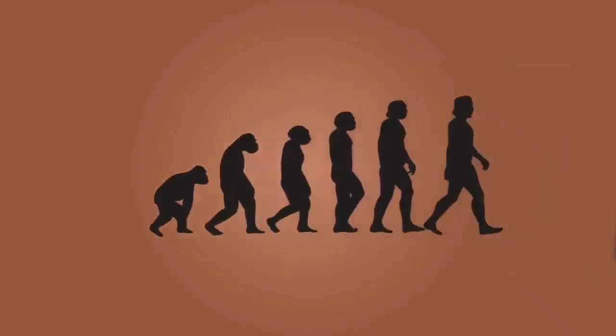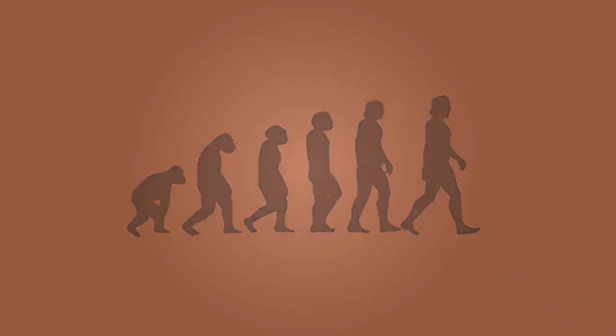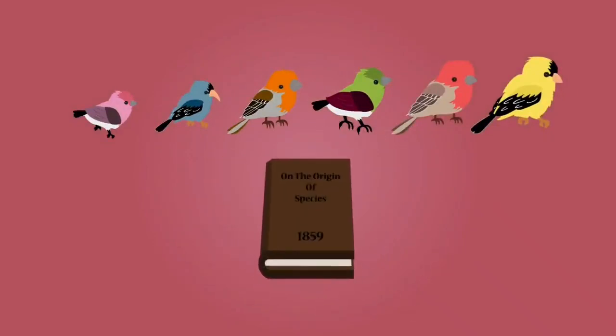Evolution by natural selection is now widely agreed to be the most accurate theory to explain the origin and diversity of all life on Earth. In this video, you have learned how the finches of the Galapagos Islands led to the development of the theory of evolution by natural selection. Is evolution of these birds still happening? See what you can find out!